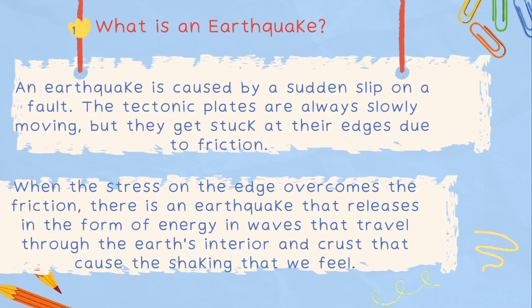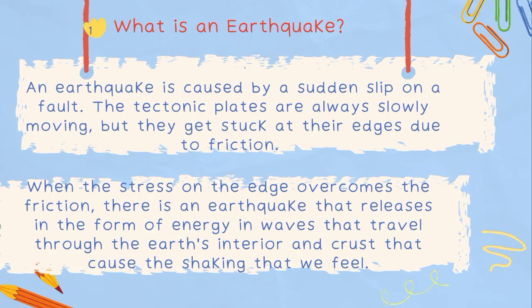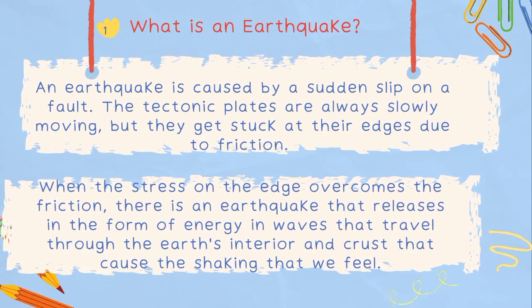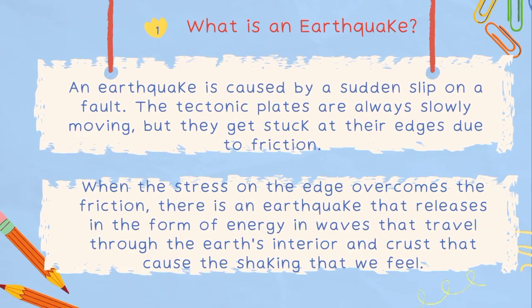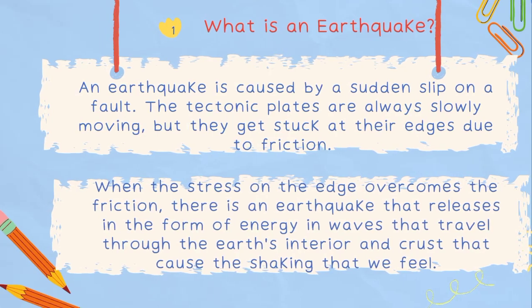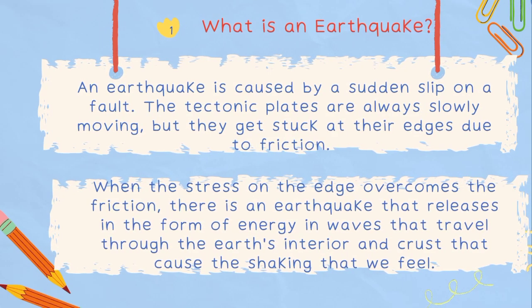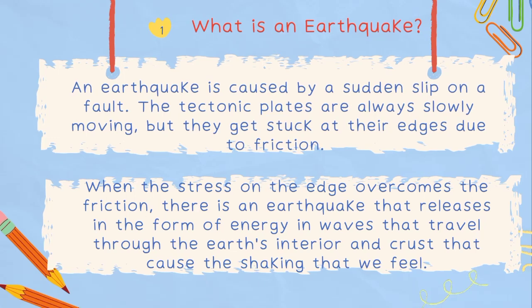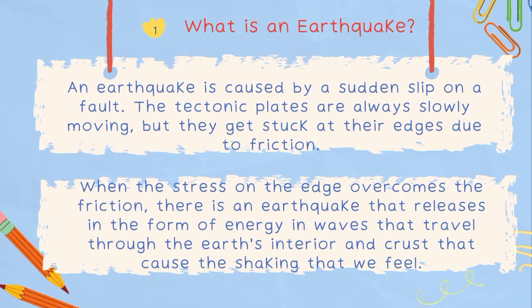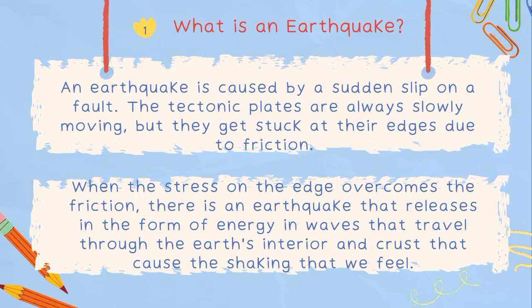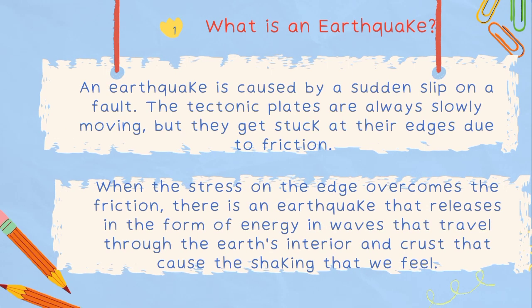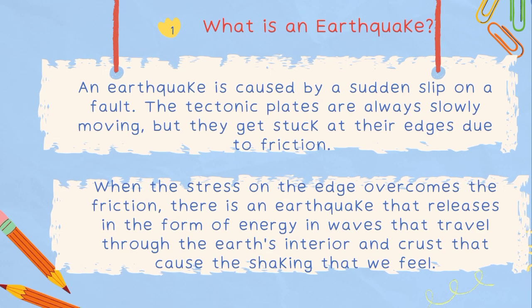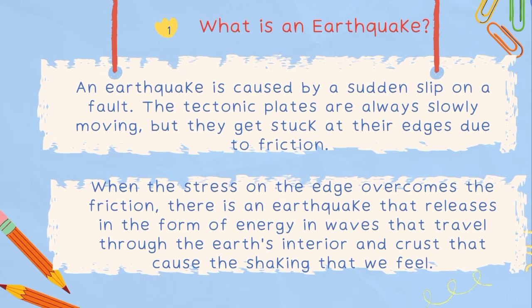What is an earthquake? An earthquake is caused by a sudden slip on a fault. The tectonic plates are always slowly moving, but they get stuck at their edges due to friction. When the stress on the edge overcomes the friction, there is an earthquake that is released in the form of energy in waves that travel through the earth's interior and crust, causing the shaking that we feel.